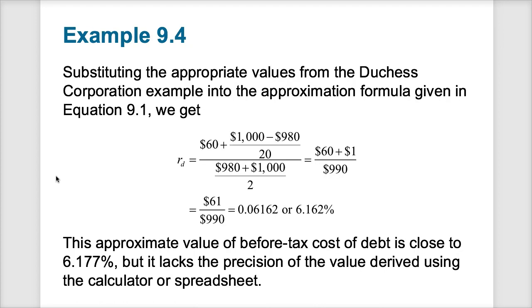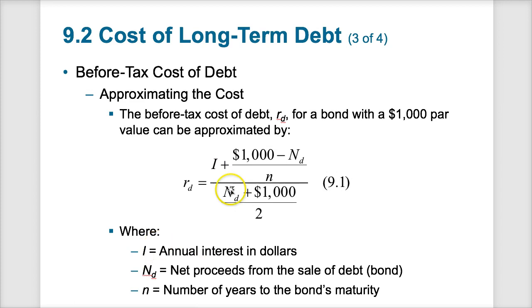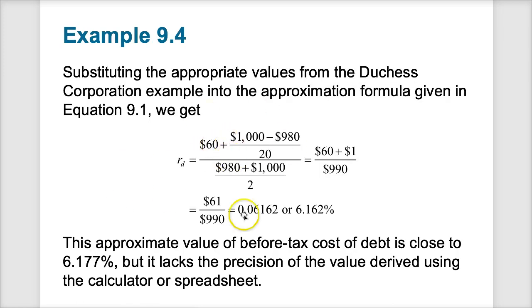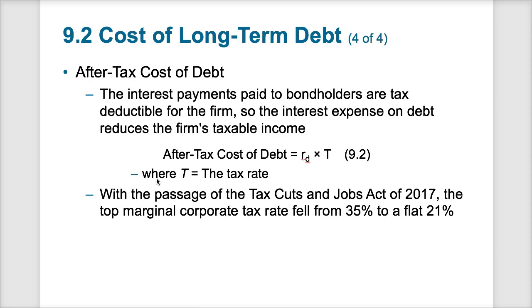Here's an example of using the approximate value. We plug in variables: the interest rate, net proceeds, and number of years to maturity. When we input this information we get approximately what the before-tax cost of debt is. This is not as precise as using a financial calculator or the exact spreadsheet formula, because it simplifies some of the more complex calculations.